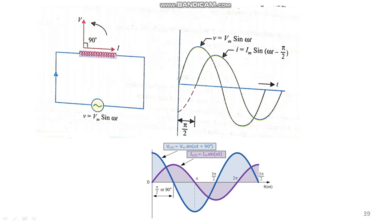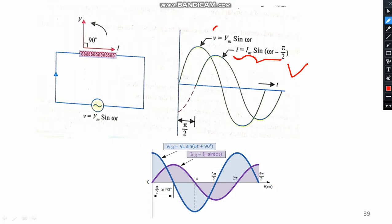Please recall whatever we discussed in the last session. An AC supply connected to an inductor: voltage is leading the current at an angle of 90 degrees, where current is lagging the voltage at an angle of 90 degrees. Consider the waveform — this waveform shows that current is lagging the voltage at an angle of 90 degrees.